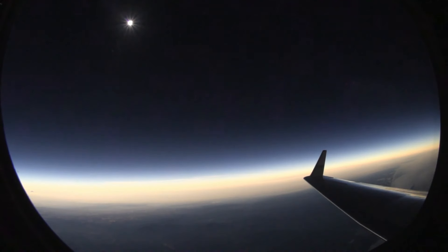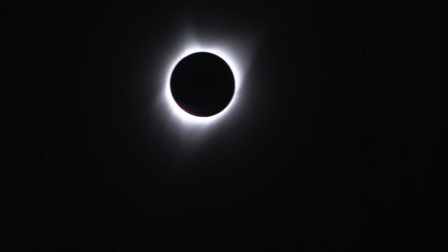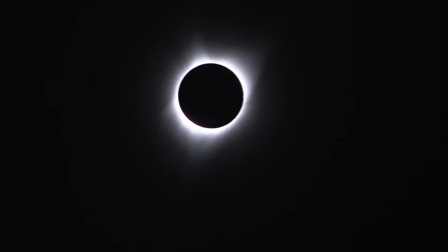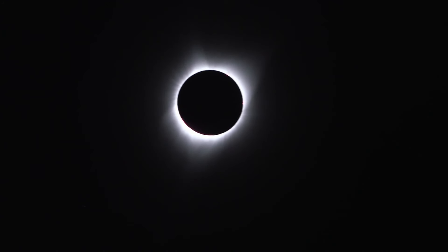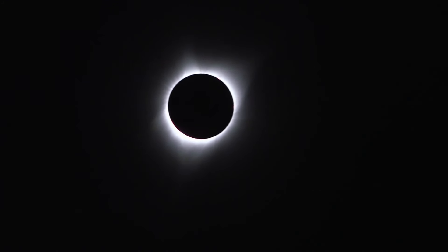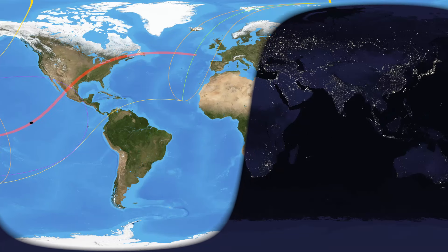Total solar eclipses — one of nature's most truly awe-inspiring events. The perfect alignment of the Moon with our Sun. But how do they happen? And more specifically, how do we know exactly when they will occur?